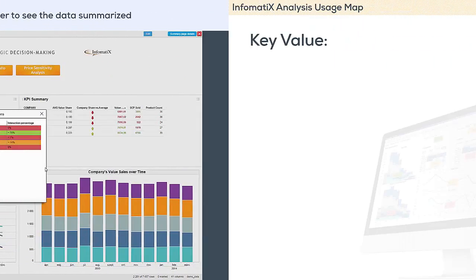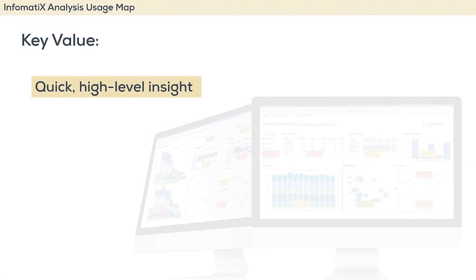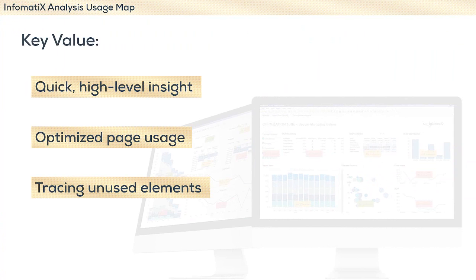The key values of Usage Map are: first, getting an immediate and high-level insight of report usage; optimizing page usage by removing unused charts or filters; and tracing unused pages in the reports. We therefore obtain rapid feedback and insights for future report optimization.